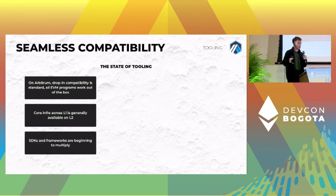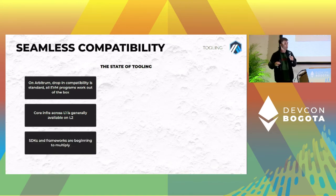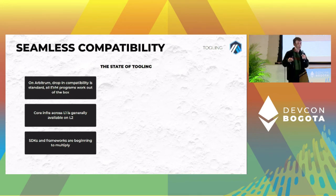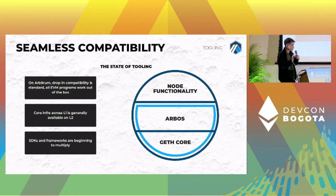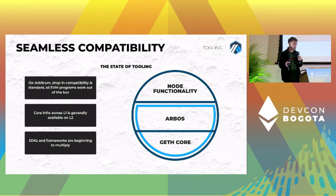SDKs and frameworks — we have new things like Foundry coming up every day. They're beginning to multiply, and you have lots of options to make your development experience easier. With Nitro, we're running Geth at the core, so in terms of compatibility we're reaching parity as much as we can.